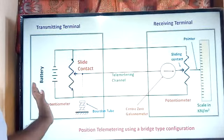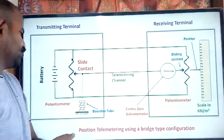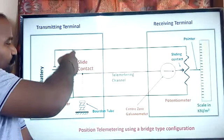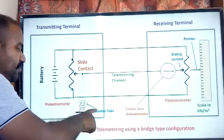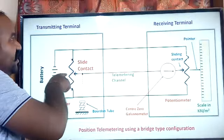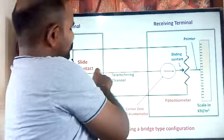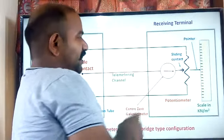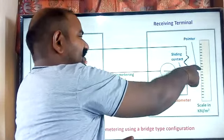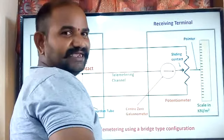We simply have two potentiometers. The third terminal acts as a position-changing element with respect to the Bourdon tube information — the sliding contact changes its position based on the information from the Bourdon tube. When there is a change in the sliding contact position at the transmitting terminal, the same information is transferred through the telemetric system to the receiving end, which then adjusts its position. This pointer moves on the pressure scale to show the information in terms of pressure.